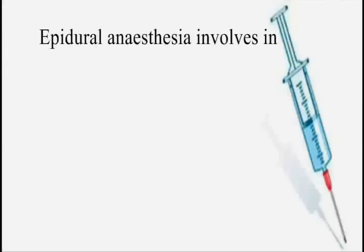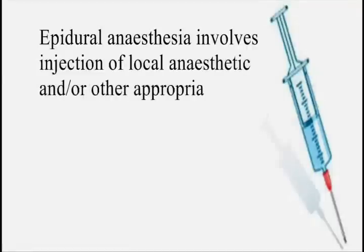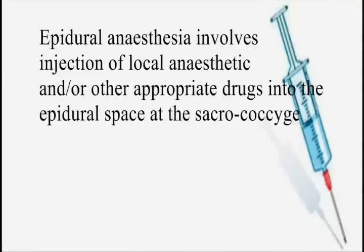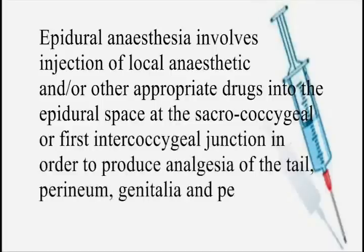Epidural anaesthesia in cattle. Epidural anaesthesia involves injection of local anaesthetic and/or other appropriate drugs into the epidural space at the sacrococcygeal or first intercoccygeal junction, in order to produce analgesia of the tail, perineum, genitalia and pelvic viscera.